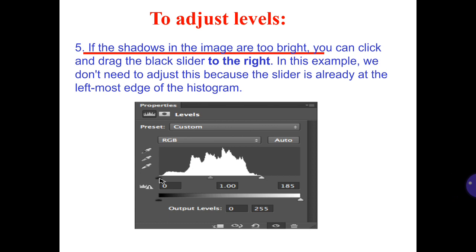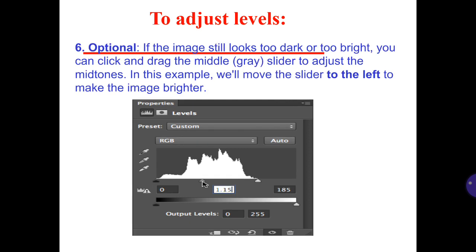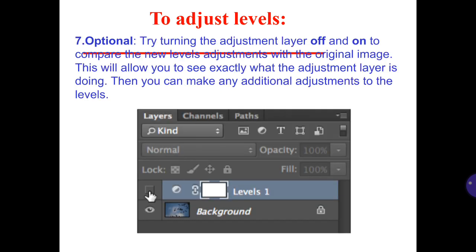5. If the shadows in the image are too bright, you can click and drag the black slider to the right. In this example, we don't need to adjust this because the slider is already at the left-most edge of the histogram. 6. Optional: If the image still looks too dark or too bright, you can click and drag the middle gray slider to adjust the midtones. In this example, we'll move the slider to the left to make the image brighter.